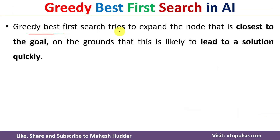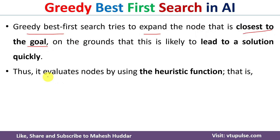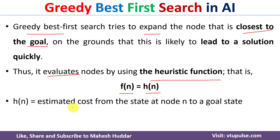The greedy best first search algorithm tries to expand the node that is closest to the goal node. It evaluates the node by using the heuristic function, that is f(n) = h(n), where h(n) is the estimated cost from the state at node n to the goal state. We will understand each of these points with the help of a simple example.